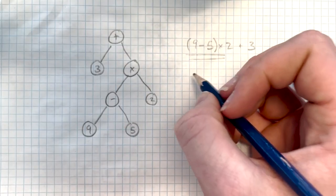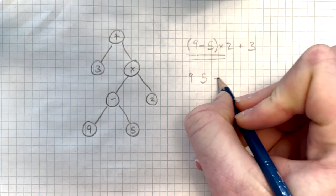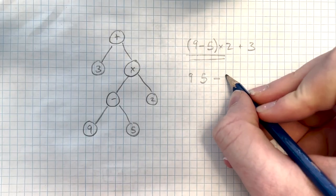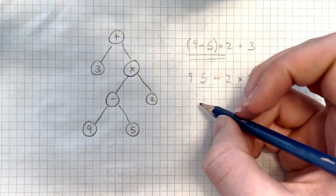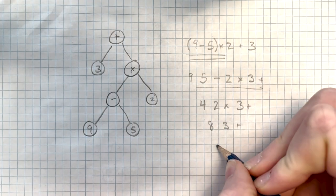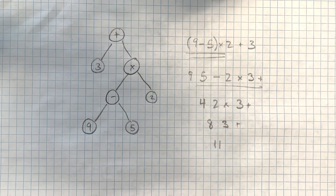With postfix, you would have 9, 5, minus, 2 times. This simplifies to 11. So you can see here how postfix eliminates the need for brackets.